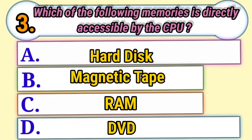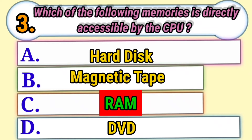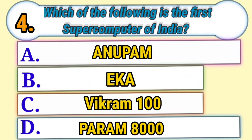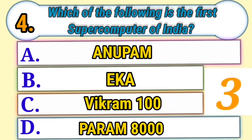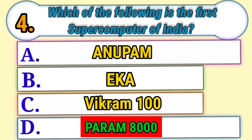Which of the following memories is directly accessible by the CPU? Answer: RAM, Random Access Memory. Which of the following is the first supercomputer of India? Answer: Param 8000.